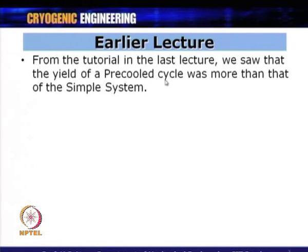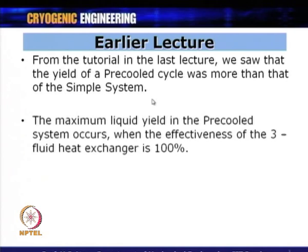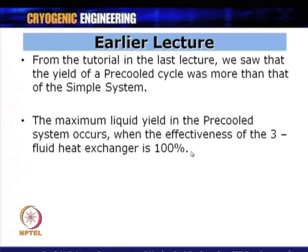From the tutorial in the past lecture, we saw that the yield of a pre-cooled cycle was more than that of the simple system, and this is why we do pre-cooling. The maximum liquid yield in the pre-cooled system occurs when the effectiveness of the three-fluid heat exchanger is 100 percent, but in practical systems the heat exchanger effectiveness will not be 100 percent, so this effect also has to be considered.